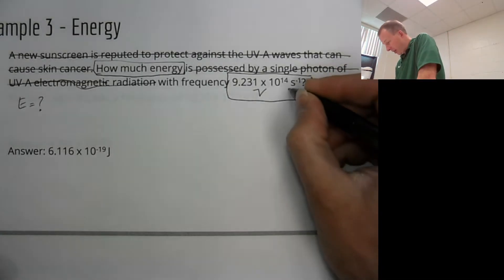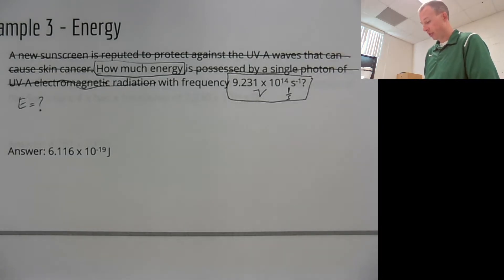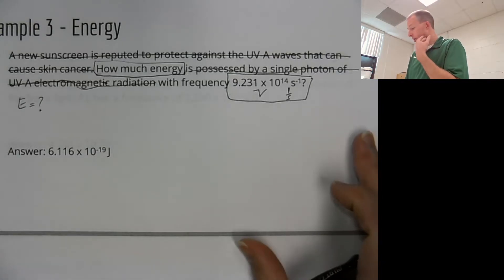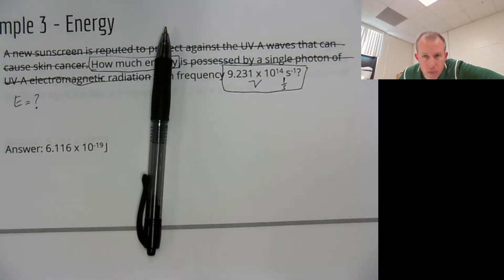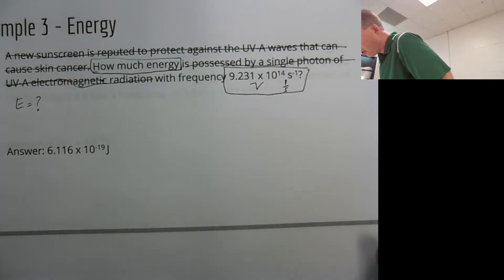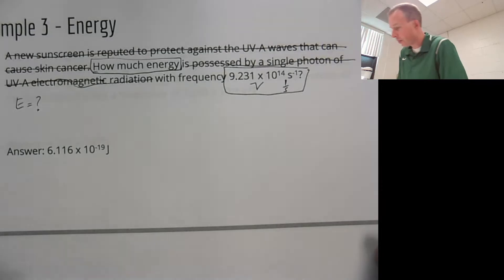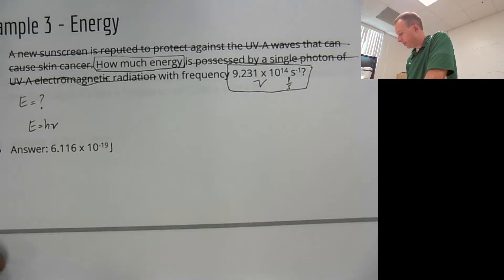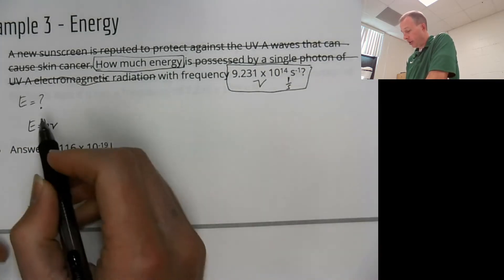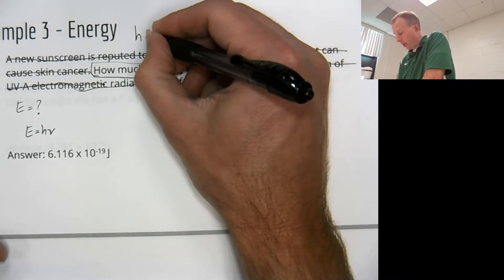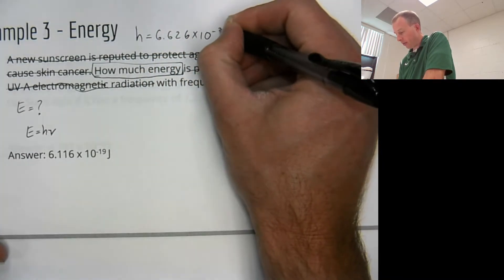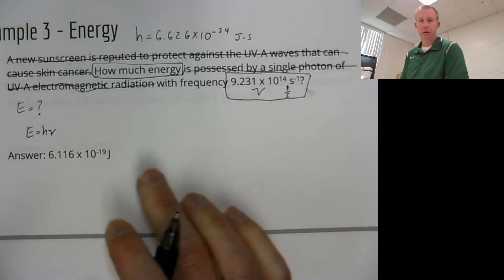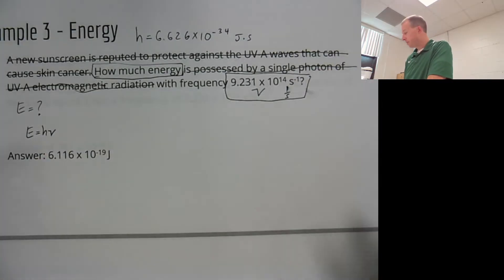All this boils down to is how much energy if you have a frequency of this. Remember S to the negative first is the same thing as 1 over S. I'm going to write it as 1 over S always for when I do examples. I've always found that just makes stuff much better for students.